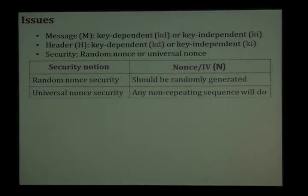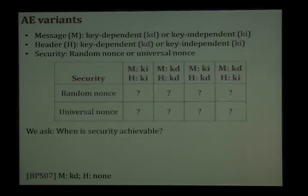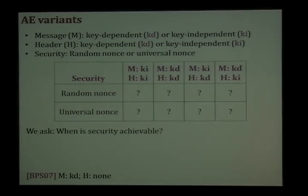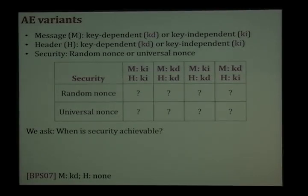So, we're starting to see that if we want to look at KDM in authenticated encryption, there are all these things we have to deal with: different kinds of nonces, messages, headers, etc. As a result, we're looking at many variants. The message and the header could both be key-dependent or not — this gives rise to four possibilities — and we also have random versus universal nonces. So we have to deal with eight variants in all. The natural question to ask is: can we get secure schemes in all of these variants?